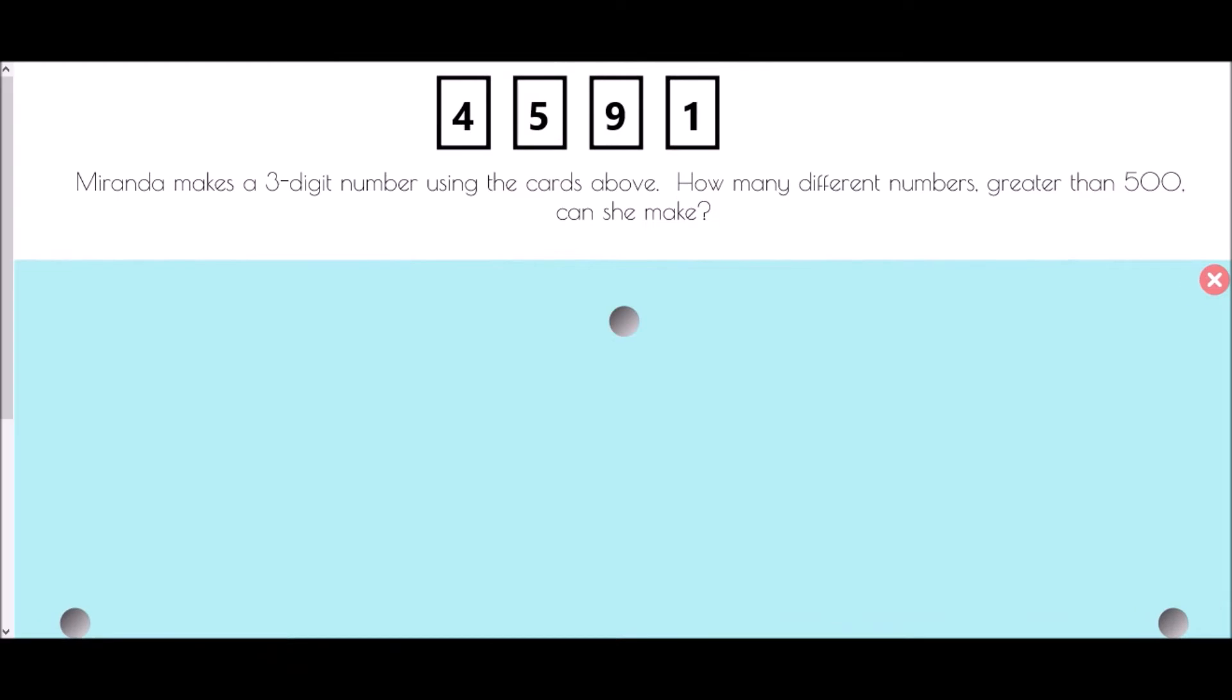So in our third example, we're looking at Miranda who is making a three digit number using the cards above. Now as these are cards, it means we can only use each digit once. How many different numbers greater than five hundred can she make? Well again, all I want to start with are some boxes to fill.